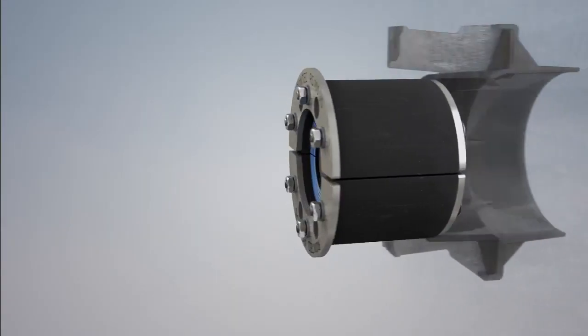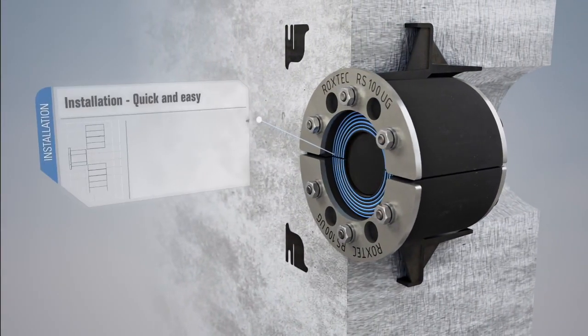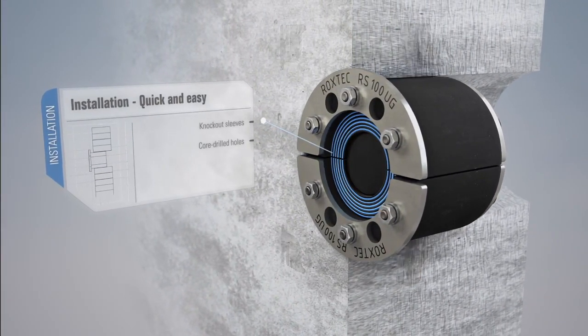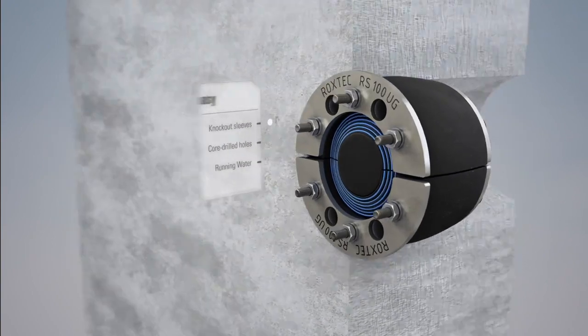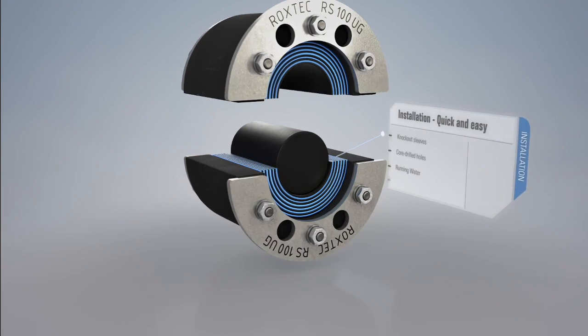Roxtec UG seals are quick to install in knockout sleeves or in core drilled holes and even in running water conditions. They are openable to provide retrofit solutions.